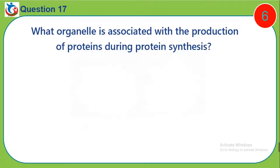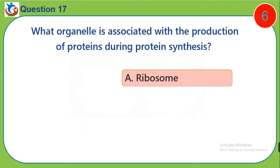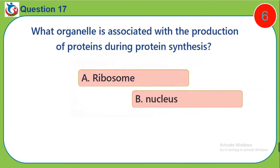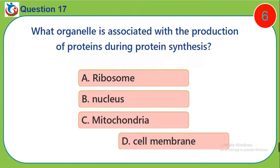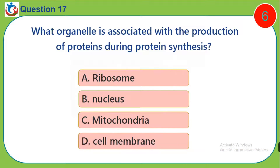Question 17. What organelle is associated with the production of proteins during protein synthesis? A. Ribosomes. B. Nucleus. C. Mitochondria. D. Cell membrane.